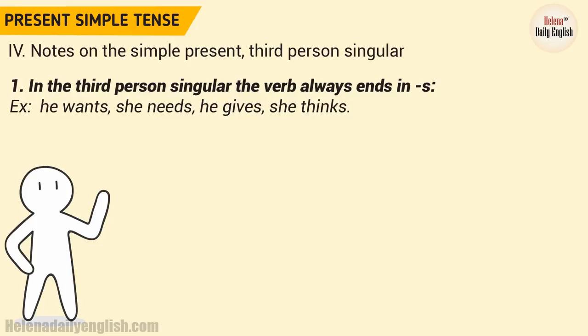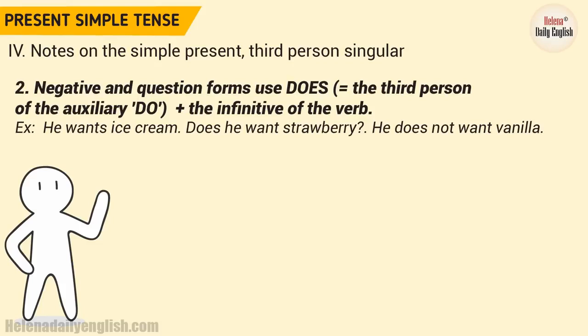4. Notes on the Simple Present — Third Person Singular. 1. In the third person singular, the verb always ends in -s. Example: He wants, she needs, he gives, she thinks. 2. Negative and question forms use does — the third person of the auxiliary do — plus the infinitive of the verb. Example: He wants ice cream. Does he want strawberry? He does not want vanilla.